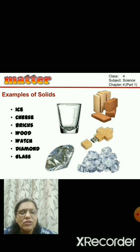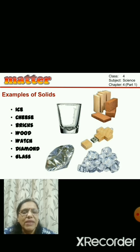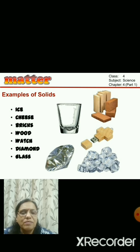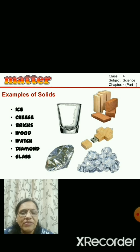The solids which you see around yourself: ice, bricks, wood, diamond, glass, watch, your furniture, books, bags, toys - all are solid. The properties of solids are that they have a definite shape and are hard.